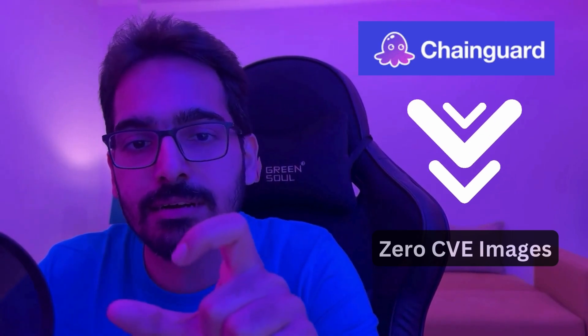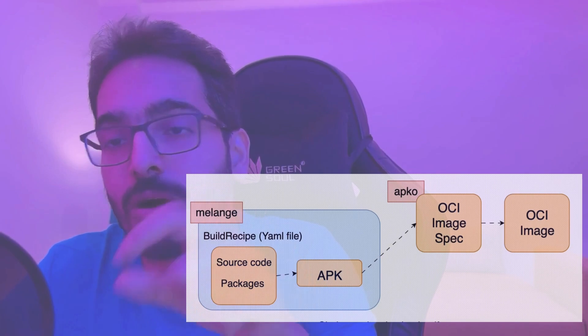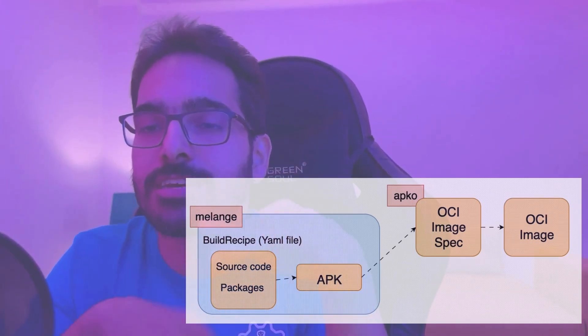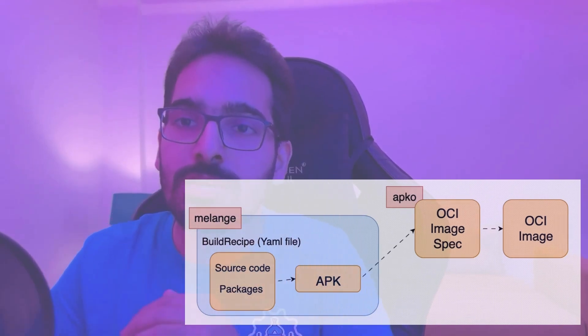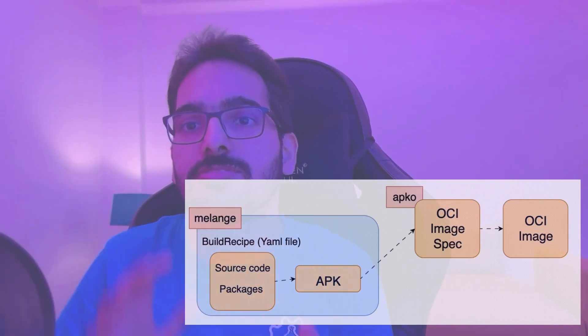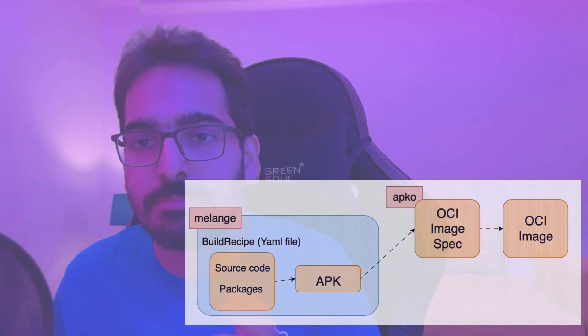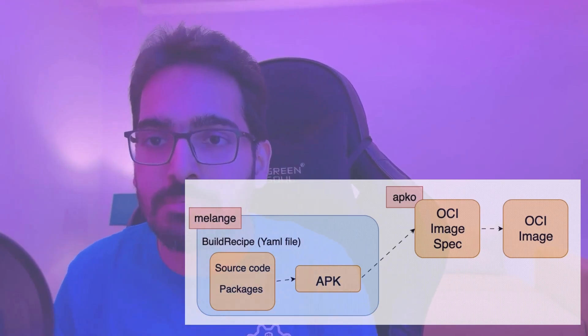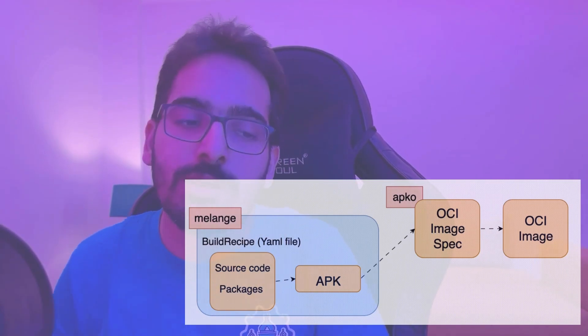One thing I found very interesting is Chainguard images. Chainguard has these images which are zero CVE images, and they are built by a special build system using Apko and Melange. How that works is: you have a configuration file, and then Apko and Melange follow a similar Docker pattern, but only for APK packages. You cannot run arbitrary run instructions. If you have the APK packages, you can easily build and ship zero CVE images using Apko and Melange — and that's exactly how Chainguard images are built.